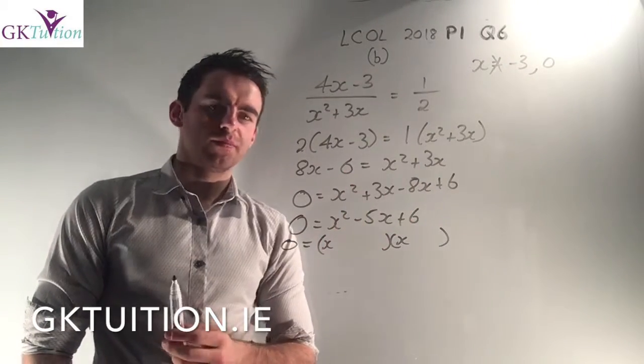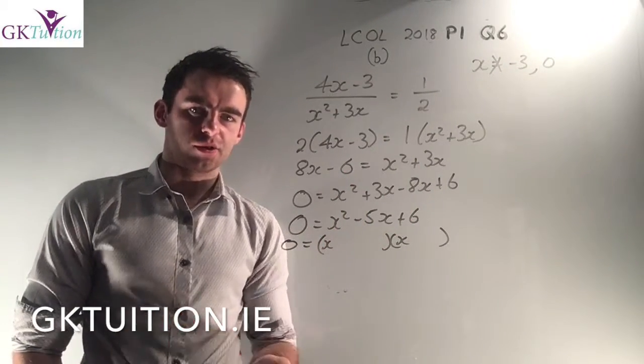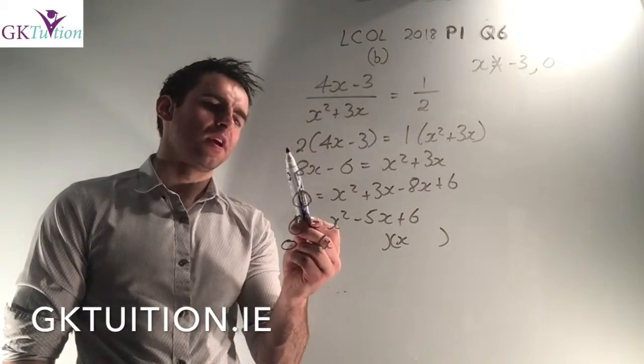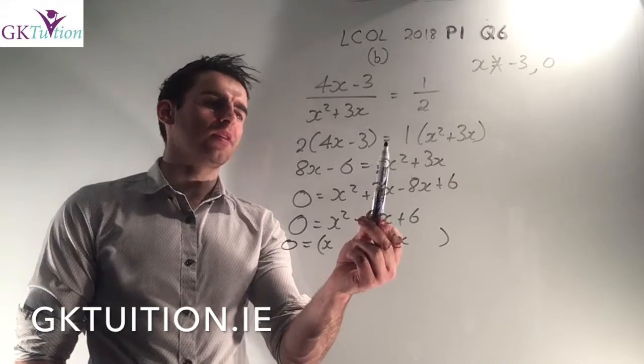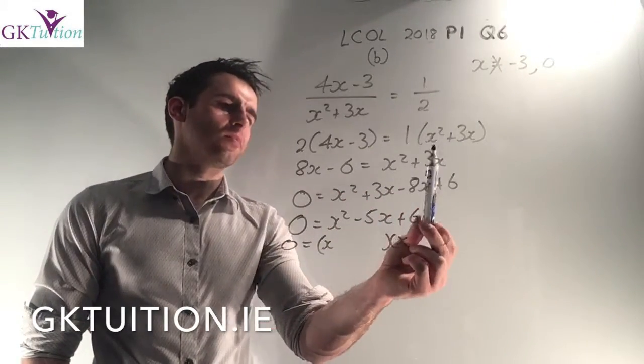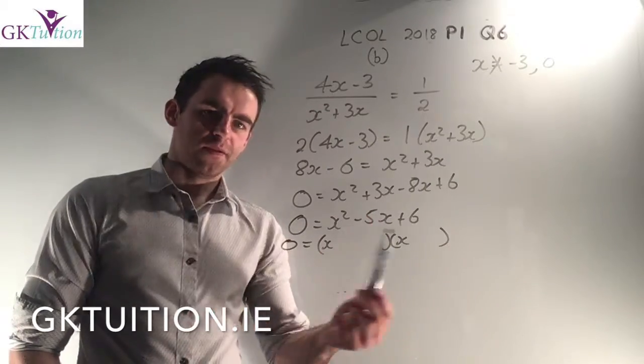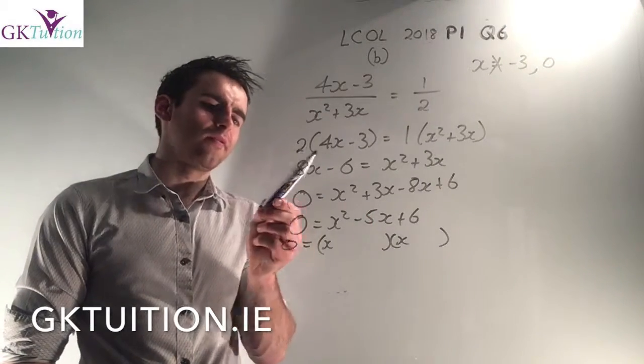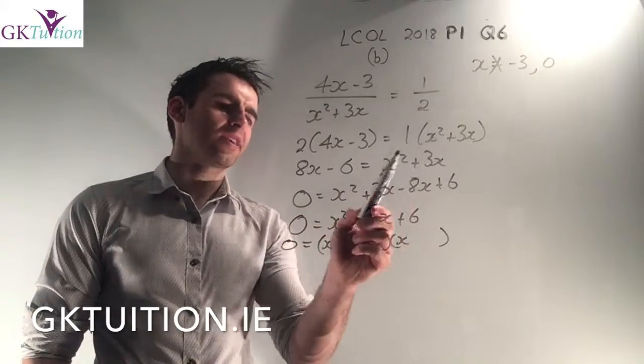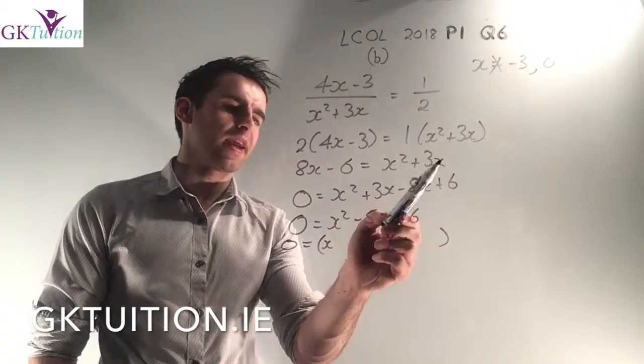You multiply the bottom on the right by the top on the left. So I get 2 by (4x-3). And that'll be equal to the top on the right by the bottom on the left, which is 1 times x² + 3x. If I multiply that out, 2 by 4x is 8x, 2 by -3 is -6, 1 by x² is x², 1 by 3x is 3x.